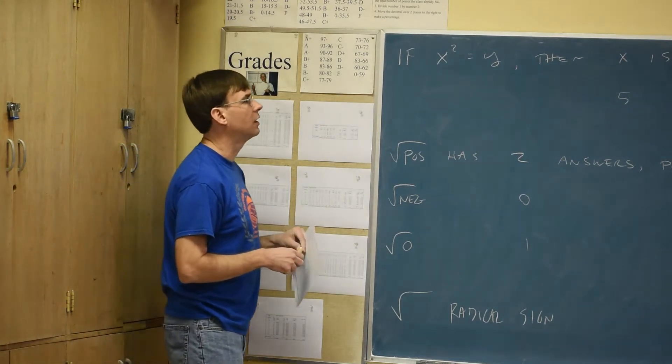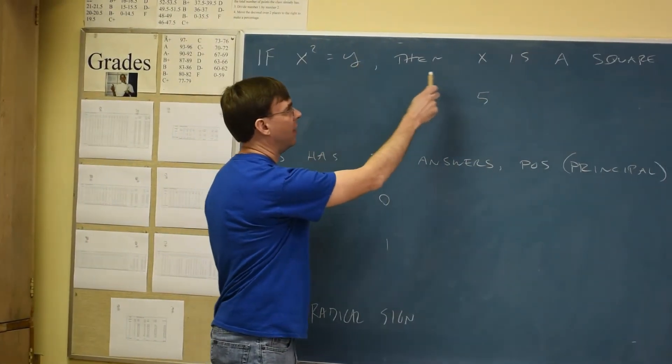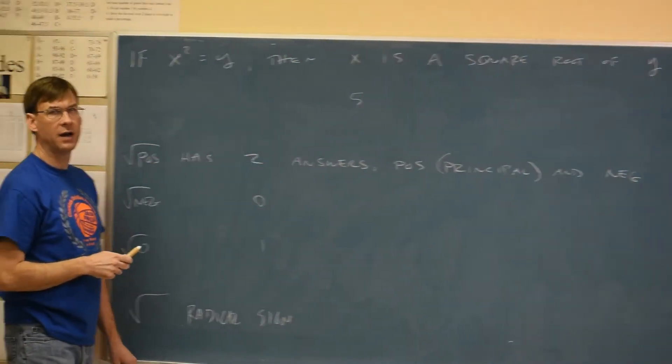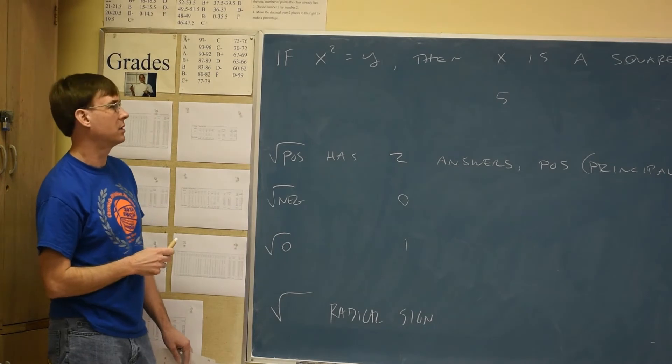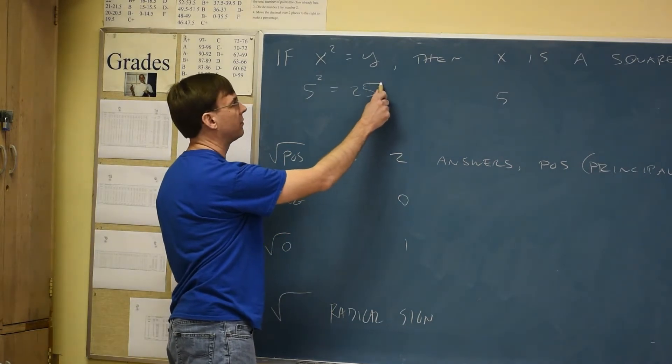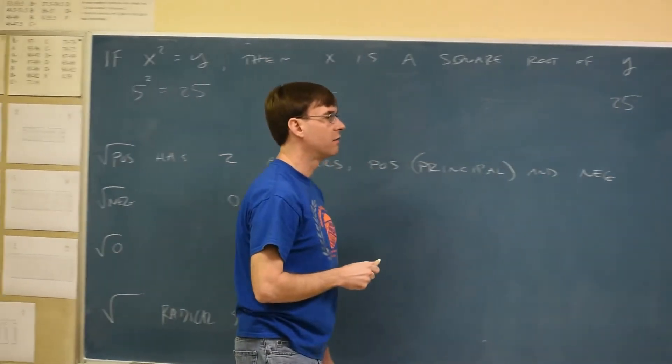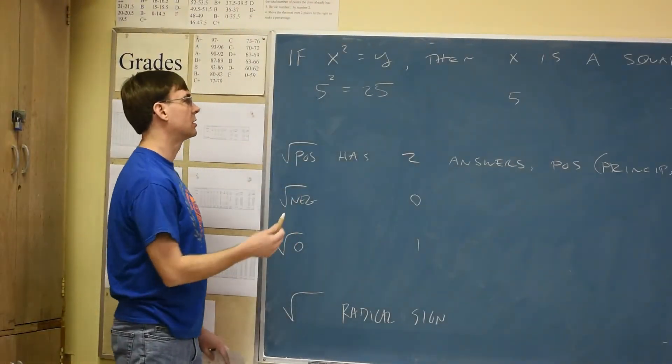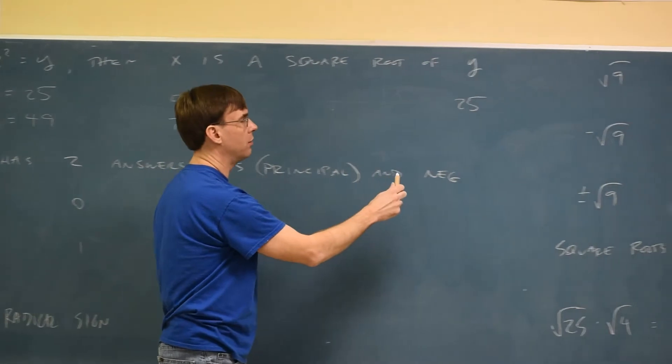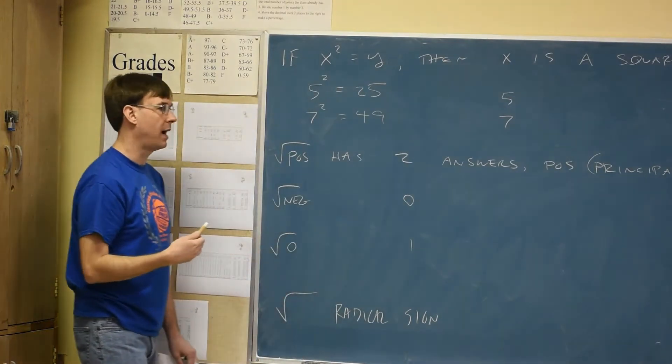So the book definition that they give in most books is they'll tell you if x squared equals y, then x is the square root of y. And most people would find that very confusing unless they put some numbers to that idea. Like 5 squared is 25, so 5 is the square root of 25. Squaring and rooting are just opposites. Like 7 squared is 49. That makes 7 be the square root of 49. Squaring takes numbers times itself. Rooting just returns it back to where it started.